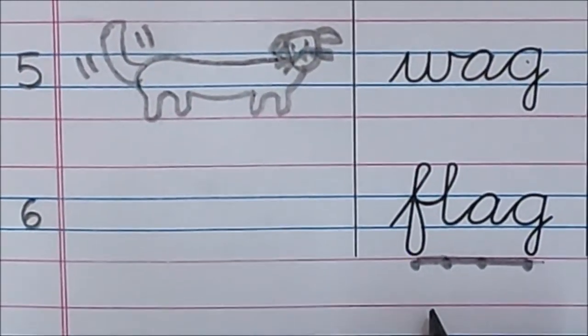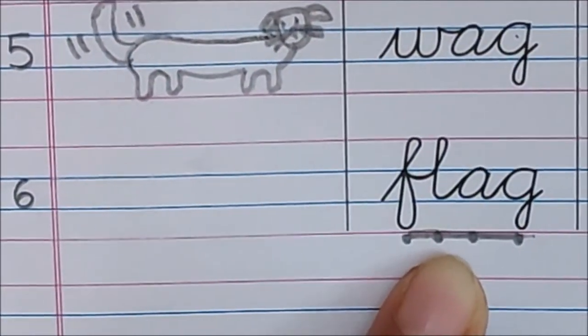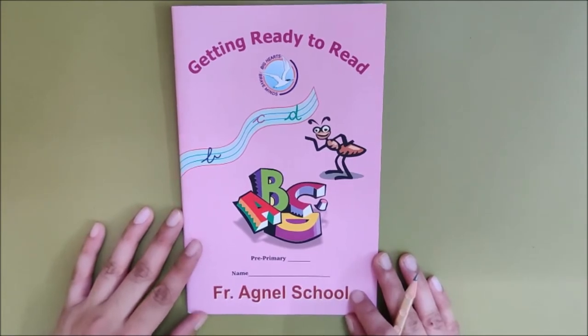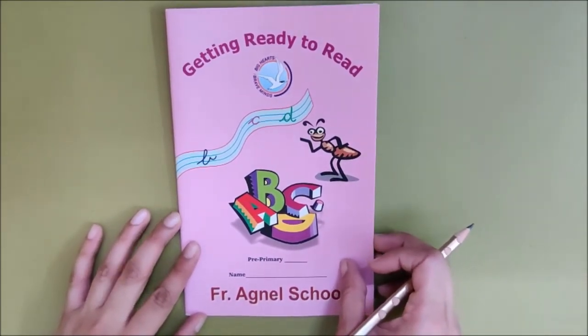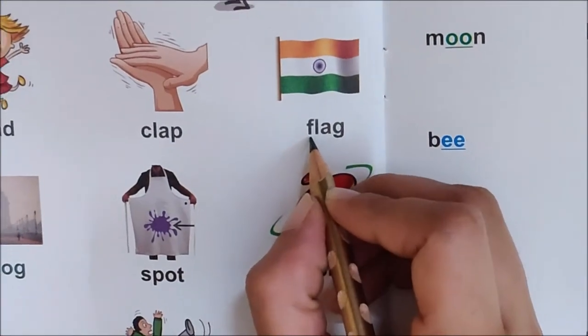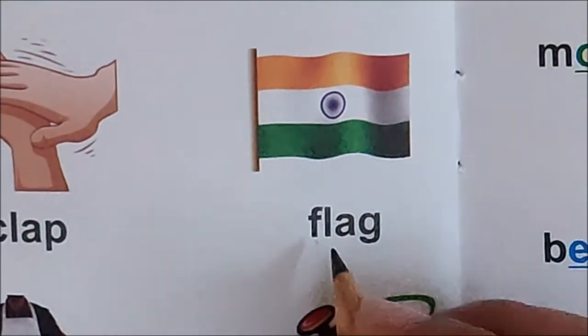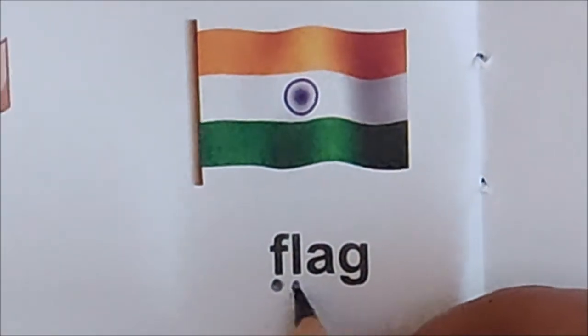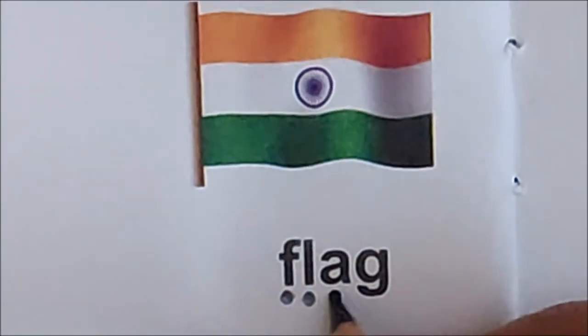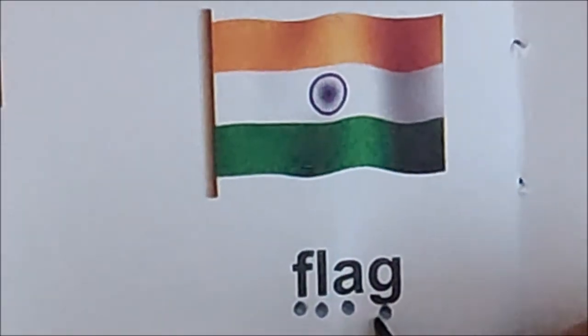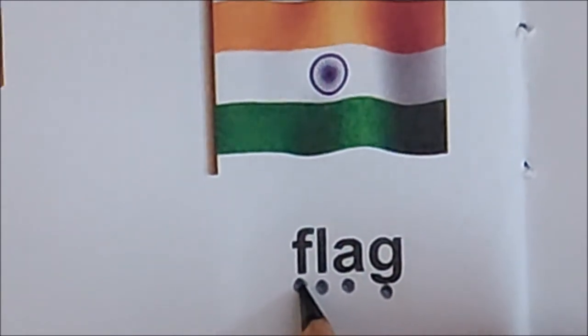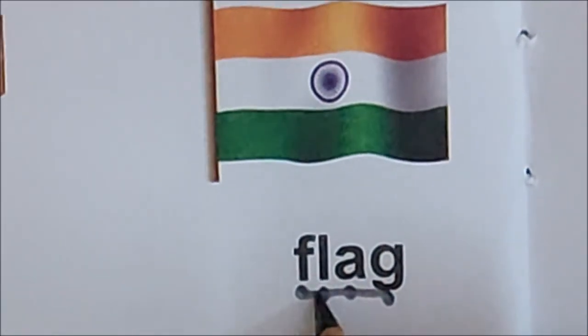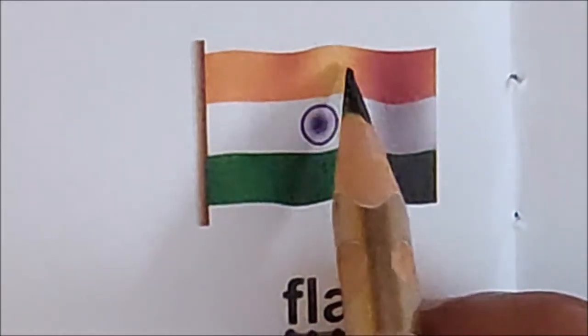So children, as we have done reading of a new word, so let us mark this word flag in our reader also. This is your reader. Open page number 14. One, ten and four extra is number 14. Look here children, we have the word flag here. So let us mark all the sounds here also. What is the first sound children? F, so put one dot below F. What is the next sound? L, then A, what is the last sound? G. Now let us join all the sounds. Read with me children, as you join.